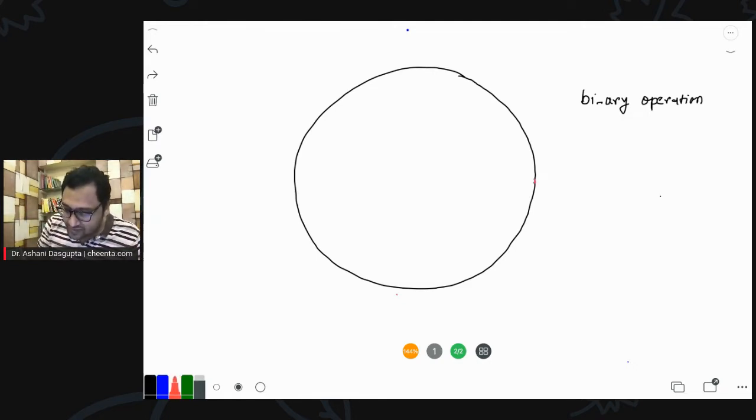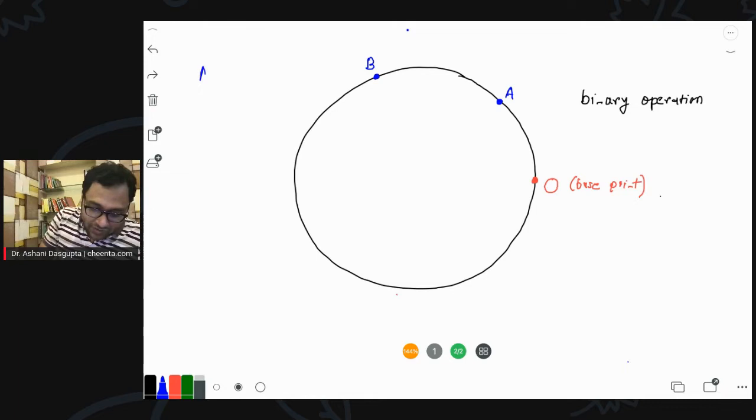So, how do you do it? Well, first you fix a point, any point on the circle. Let's call that point O. You can think of this as the base point of the circle. Now, you pick up any two points. Let's say A and B. You pick up any two points on the circumference of the circle.